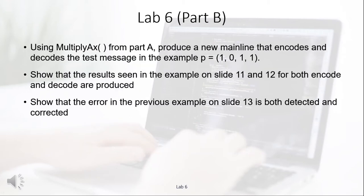In Part B of the lab, we'll use the multiply_ax function developed in Part A and replace the main with Hamming matrices — including the Hamming encode and decode matrices — to demonstrate encoding and decoding of the 1-0-1-1 message. We'll verify that the results match what was shown in slides 11 and 12, and also inject an error in the received message to show that the error from slide 13 is both detected and corrected.